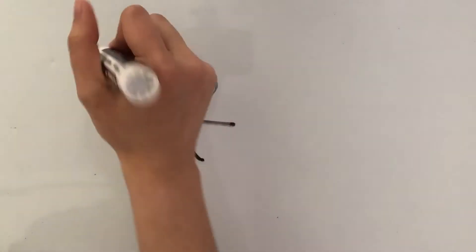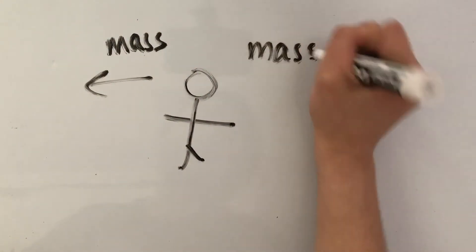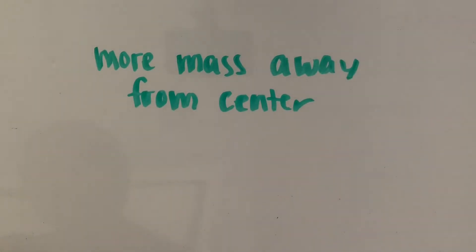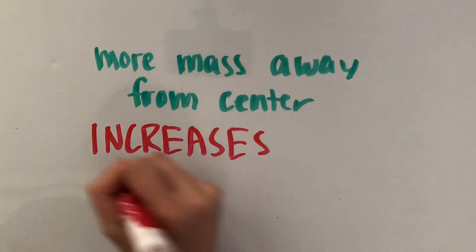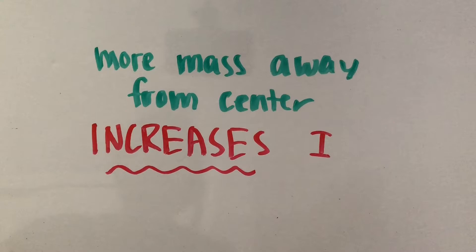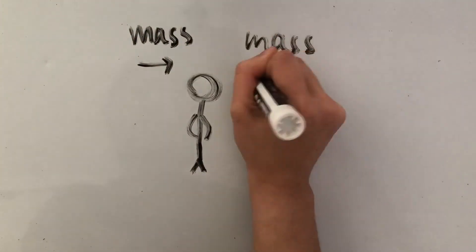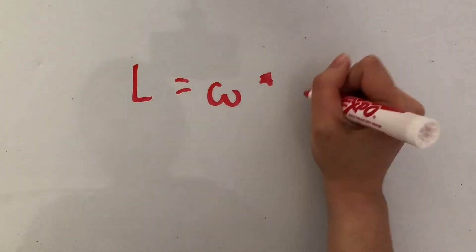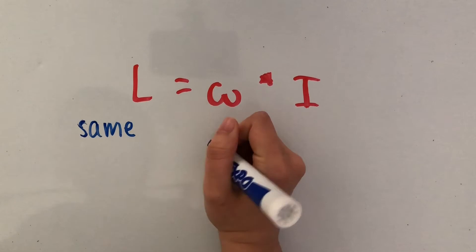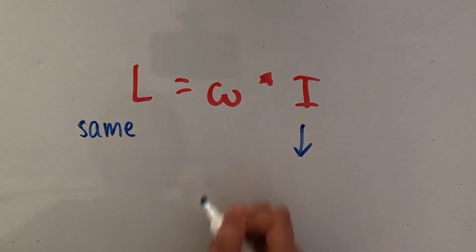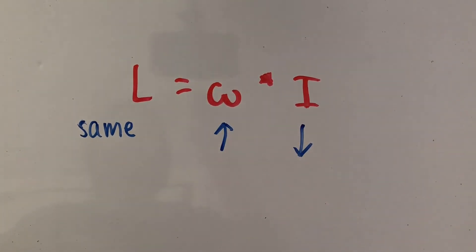Why does this happen? At the beginning, with her arms stretched out, more mass is distributed away from her body or her center. When there's more mass that's farther away from the center of an object, that increases the moment of inertia. With her arms close to her body, all of her mass is mostly concentrated near her center, so her moment of inertia decreases. Since angular momentum has to stay the same, when her moment of inertia decreases, her angular velocity has to increase to make up for this change.